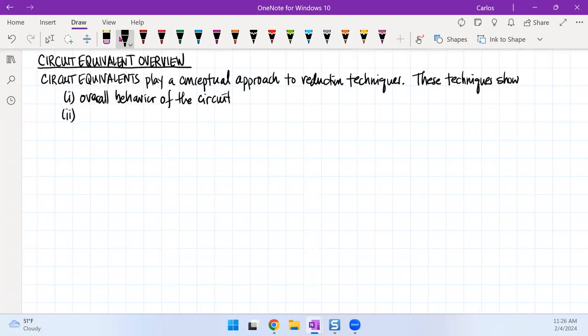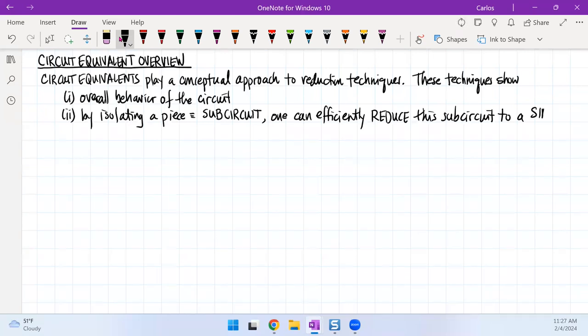But most important is that by isolating a piece of the circuit, that piece is typically called a sub-circuit, one can efficiently reduce this sub-circuit equivalent to a single equivalent series or parallel resistance.